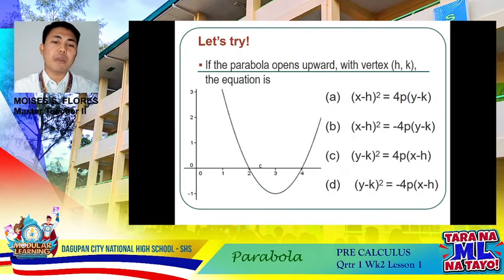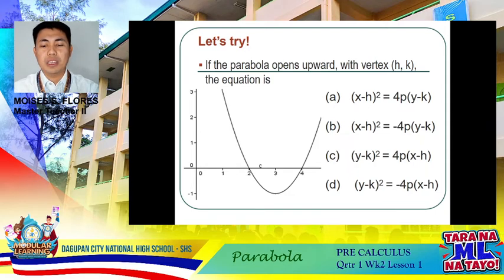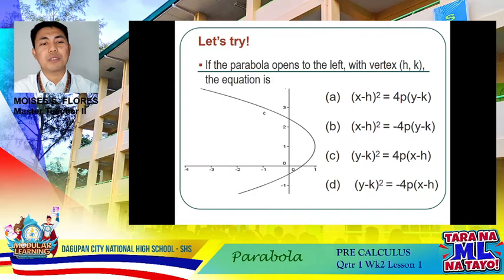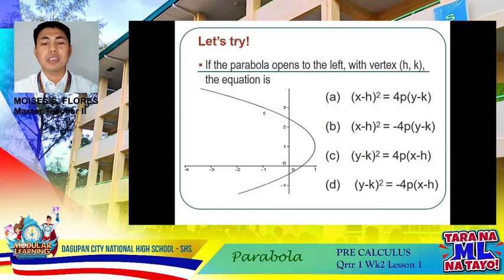If the parabola opens to the left with vertex at (h, k), the correct equation has y on the second degree and 4P is negative. If it opens upward, x is on the second degree and 4P is always positive. If it opens to the left with vertex at (h, k), the variable y is on the second degree and 4P is negative.